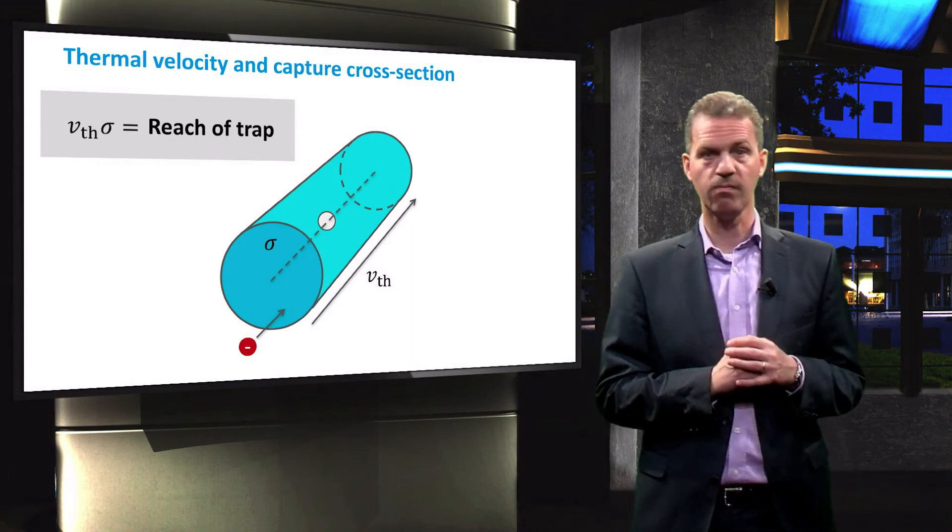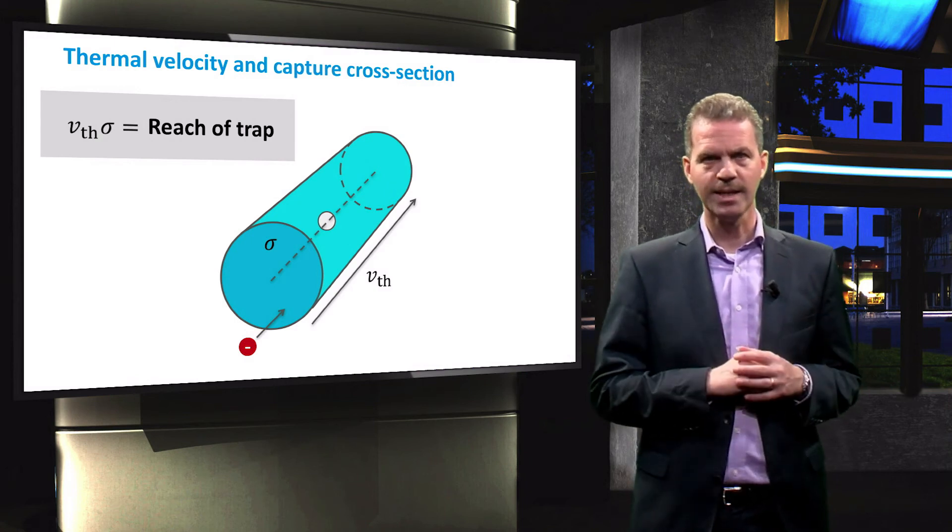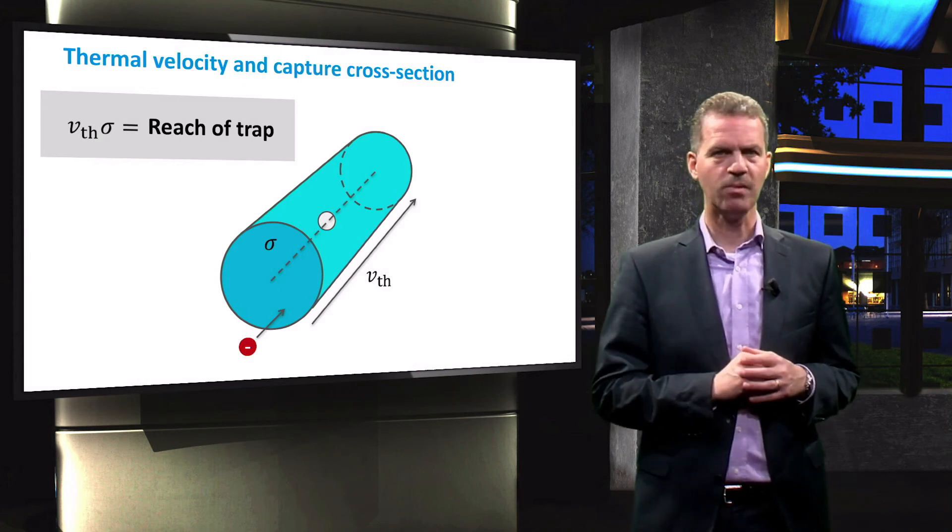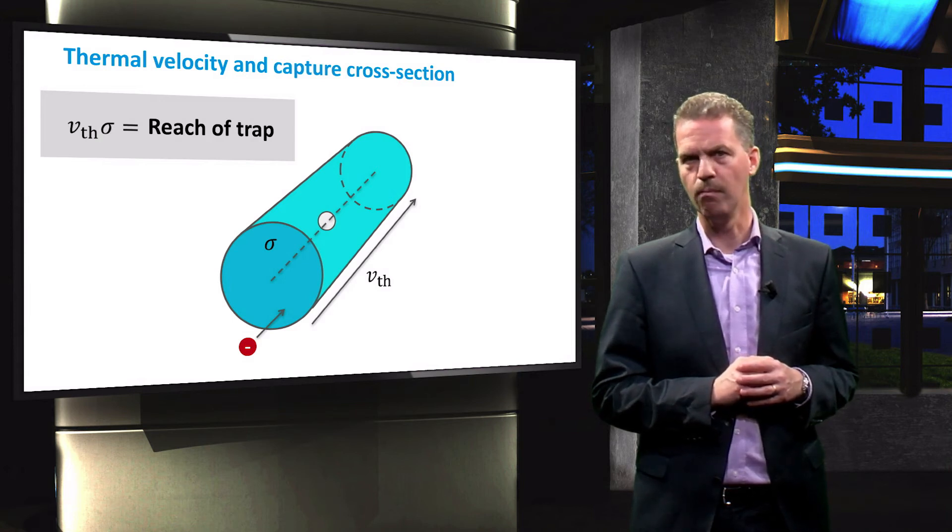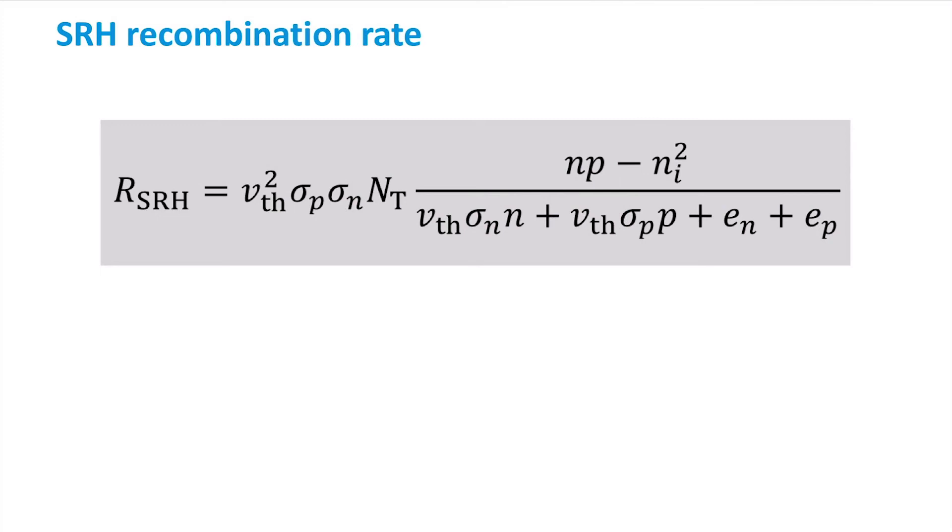The same explanation is valid for holes. We have now discussed all the process rates, and we understand each of the terms in the equations. The next step is to examine the recombination rate in more detail. The recombination rate of SRH recombination is given by the following expression, and follows from detail balance of the rate equations that we saw earlier for the different capture and emission processes.